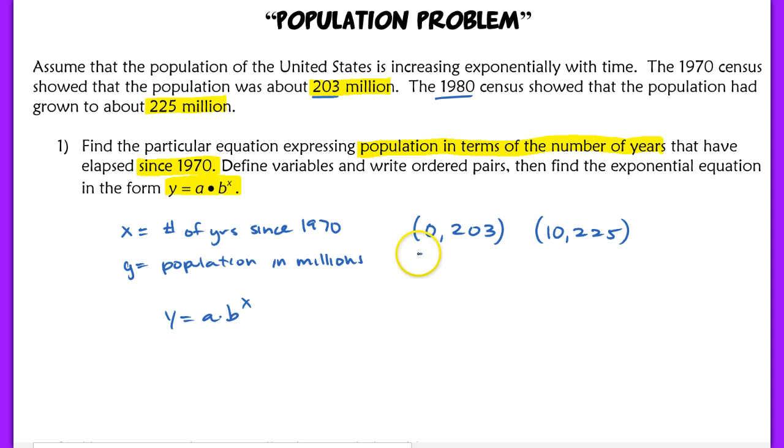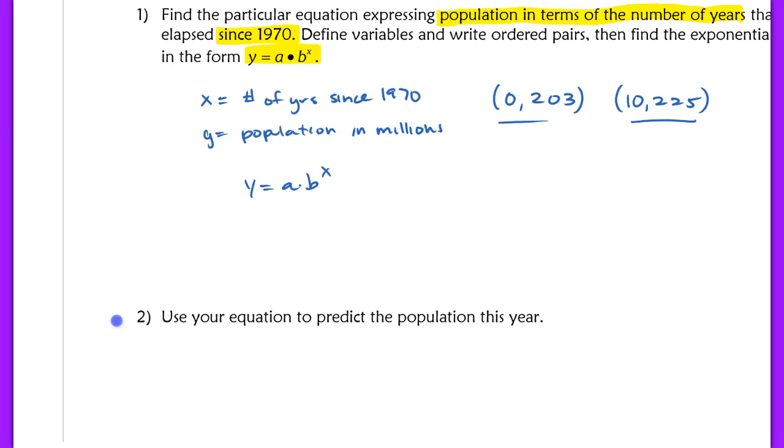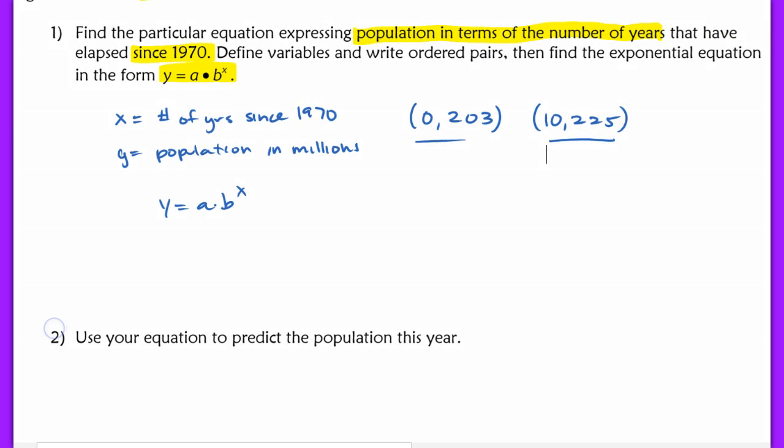Based off of these coordinates, I want to plug that into my general equation y equals a times b to the x. We remember a is our initial value, so we have y equals 203 times b to the x. This is my initial value. After that, I'm simply going to solve for b by plugging in this (x, y) coordinate pair. So I have 225 equals 203 times b to the 10th power.